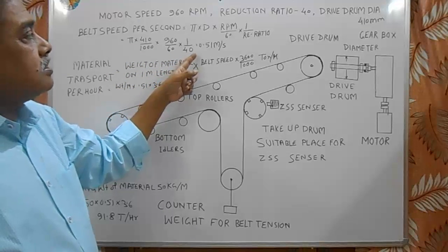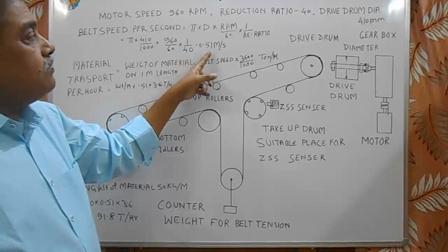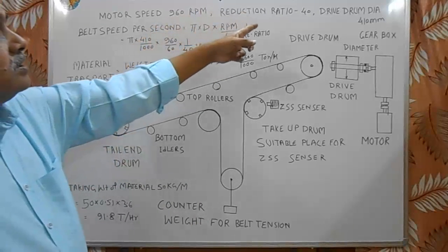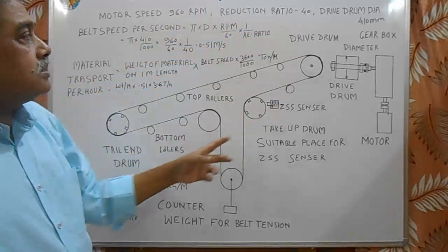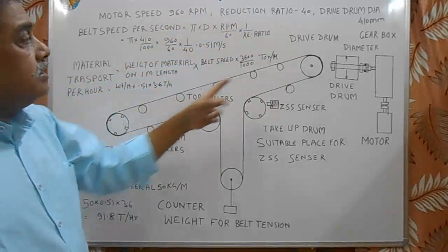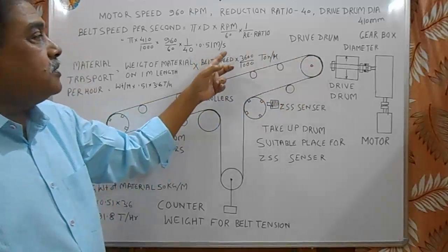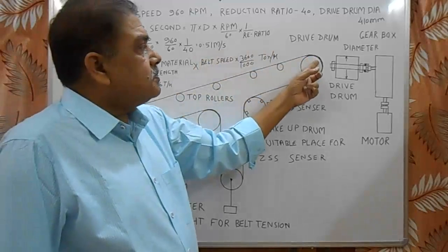It is equal to 0.51 meters per second. This means with this motor of 960 rpm, reduction ratio of gearbox 40, and drive drum diameter 410, the linear speed of drive drum surface is 0.51 meter per second and the belt speed is same as the linear speed of drive drum.